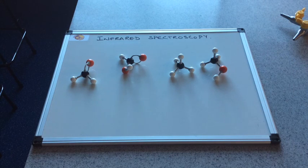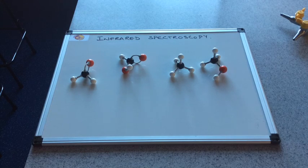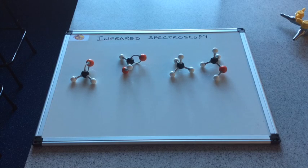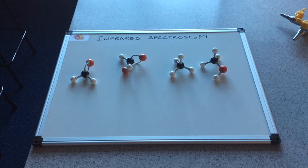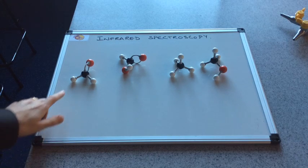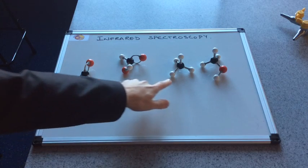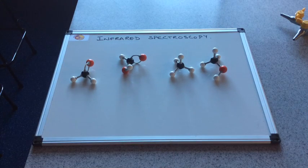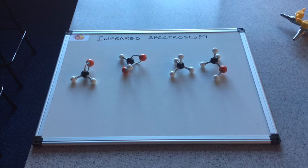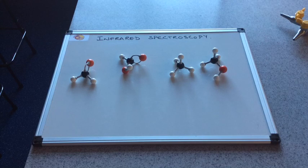In this video, we're going to look at one of the analytical techniques that we need to study at A-level, and it's called infrared spectroscopy. Basically, what infrared spectroscopy allows us to do is to identify bonds or functional groups in organic molecules. I'm going to give you an explanation of how the process works. I'm going to keep it very simple, but it's all you need to know for the A-level syllabus.